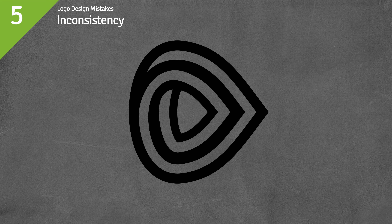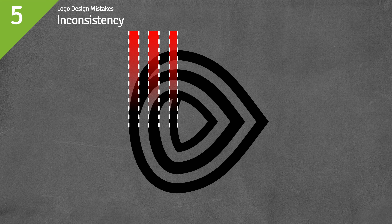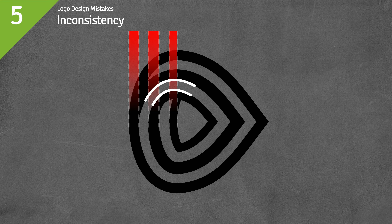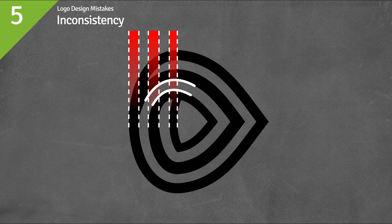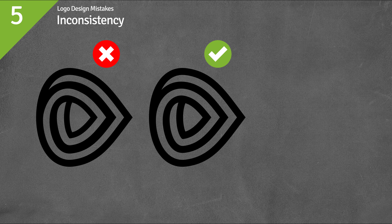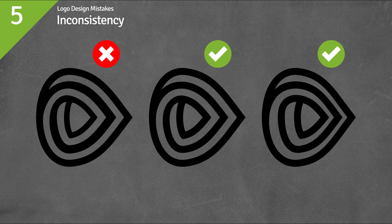Mistake number five: inconsistency. In this logo there are lines and gaps, but the lines are not all the same weight or thickness, and the gaps are also different sizes — and it doesn't look like there's any good reason for this. There is no rule that says lines and gaps have to be perfectly even; you have artistic freedom. But inconsistency like this can look like a mistake or like you simply do not care about the details — it feels like sloppy design. This is much better: all the lines and gaps are now neatly evened out. And this also works — lines and gaps gradually increasing or decreasing. Now it looks deliberate and much more attractive.